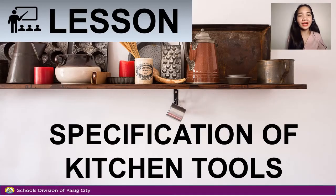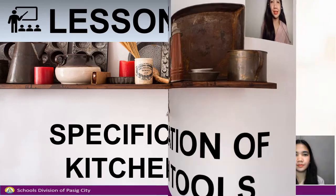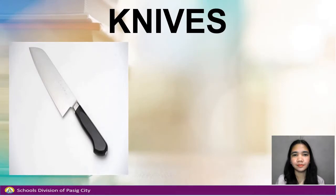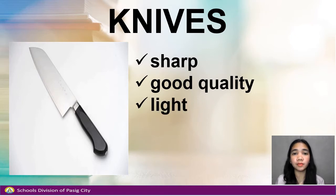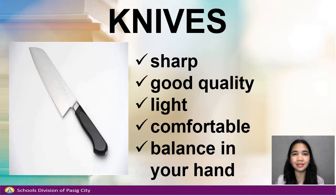Now let's have the discussion of the lesson: Specification of Kitchen Tools. Let's talk about knives. Kitchen knives should be sharp and have good quality. Sharp knives can cut better and are easier to work with. When selecting knives, consider buying ones that are light, comfortable, and balanced in your hand.